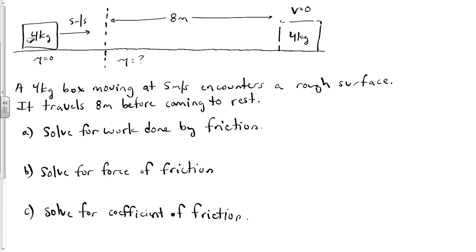The work-energy theorem states that the work done by the force, in this case friction, is equal to the change in kinetic energy. We know what the kinetic energy is when the object starts moving: it's 1/2 mv².